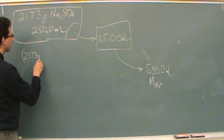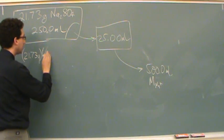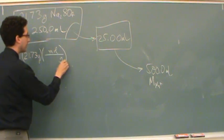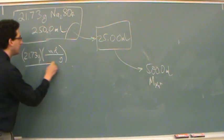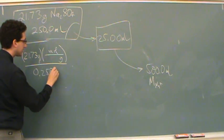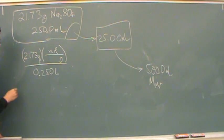21.73 grams. We want molarity. Let's go straight to moles. So you'll need to find out the molar mass of this compound and that'll give me moles on top. To get the molarity, I'm going to divide by liters and I'll just change it to 0.250 liters right off. And that's the same as 250 milliliters.